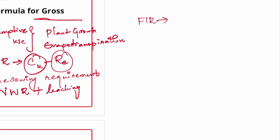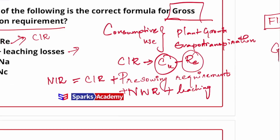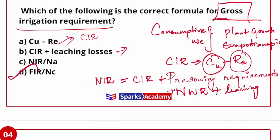Now comes field irrigation requirement. When we supply water to the field, there are chances of run-off losses and deep percolation losses. So field irrigation requirement equals net irrigation plus run-off losses plus percolation losses. If we also consider conveyance losses, then gross irrigation requirement equals field irrigation requirement divided by conveyance efficiency.